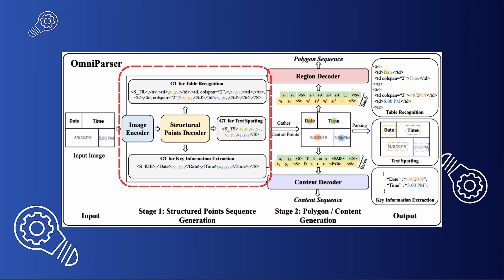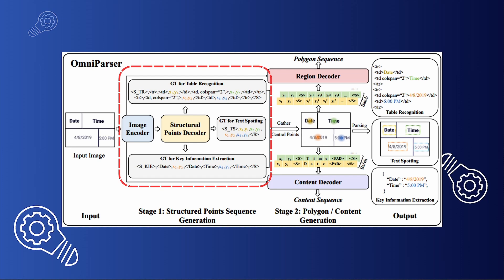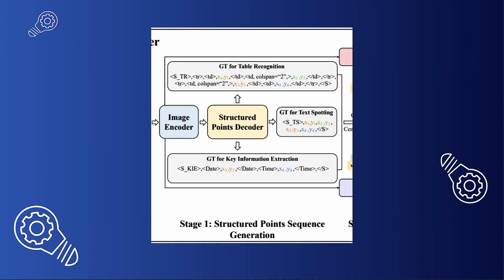So how does this model work? OmniParser leverages a unified structural representation to handle document parsing tasks through three core modules: visual layout analysis, structured points sequence generation, and context-aware language understanding. OmniParser employs a unified interface across tasks, connecting structured tokens with region and content sequences through structured points. For instance, tasks like key information extraction and table recognition are represented as specialized structure tokens such as address S for KIE and TR for table rows. The X and Y coordinates are normalized to image dimensions, quantized, and tokenized for a consistent format across tasks. This tokenization allows the model to identify relationships among document elements by aligning positional data with task-specific tags.